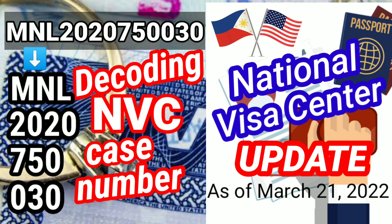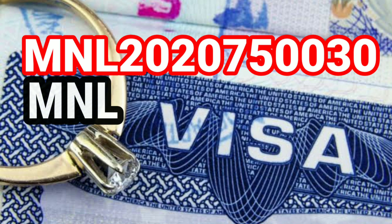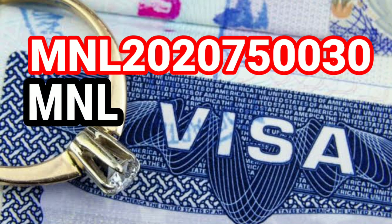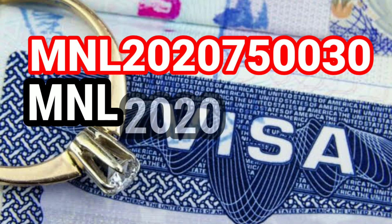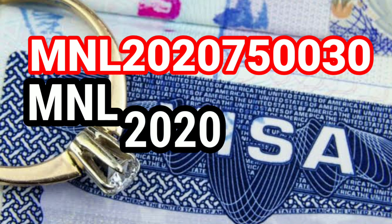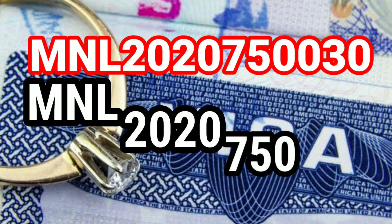Before we have the NVC or National Visa Center update, let's try to decode first what our case ID or case number really means. A case number has three letters followed by 10-digit numbers. The three letters indicate the embassy, and 2020 indicates the year in which the case was created. The next three-digit numbers indicate the number of cases created in this category.